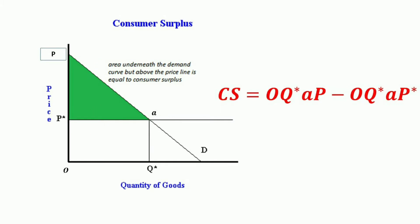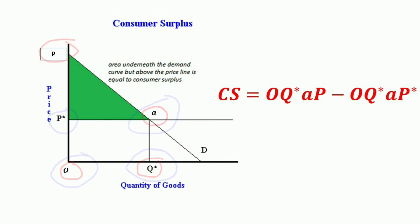The consumers on the left would have been willing to pay a higher price than they actually pay, so the equilibrium price saved them some money. Graphically, the amount of extra money that ends up in the consumer's pocket is the area between the demand curve and the horizontal line. Notice that the area under the horizontal line is a rectangle. Thus consumer surplus is OQ*AP minus OQ*AP*, which is equal to P*AP.